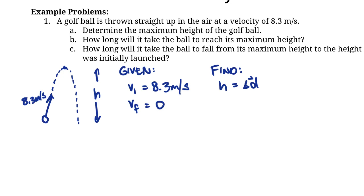We know as this ball is thrown up in the air, it's going to slow down and decelerate, so it's experiencing uniform acceleration. The equations we have to analyze that are those five equations of uniform acceleration. For those equations, we always need three things in order to solve for the fourth, and in this case we only have two things, so there's one more assumption we're going to need.